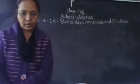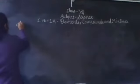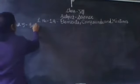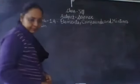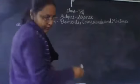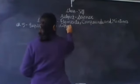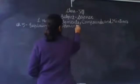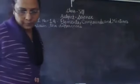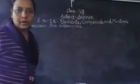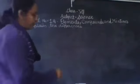Question number five is going on — explain the differences. So let's write down question five. We have completed part A, which was metals and non-metals. Now part B: difference between mixtures and compounds.